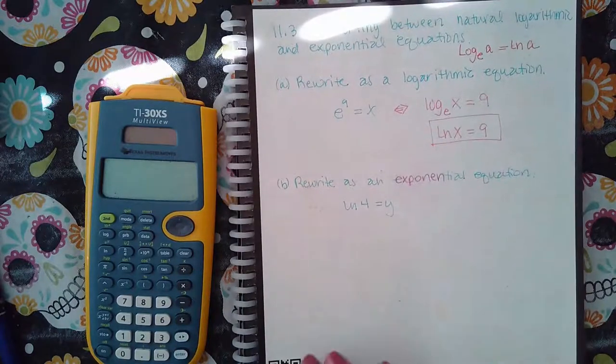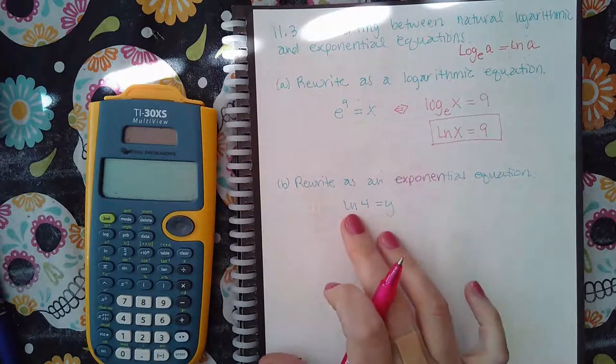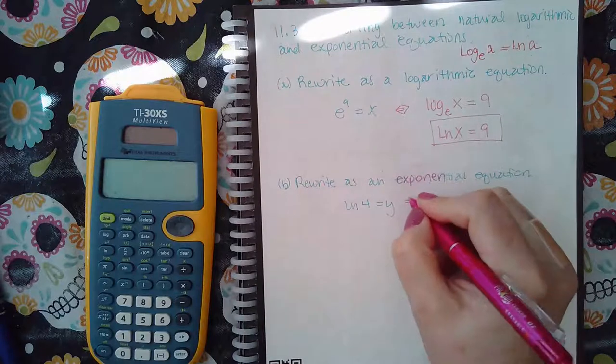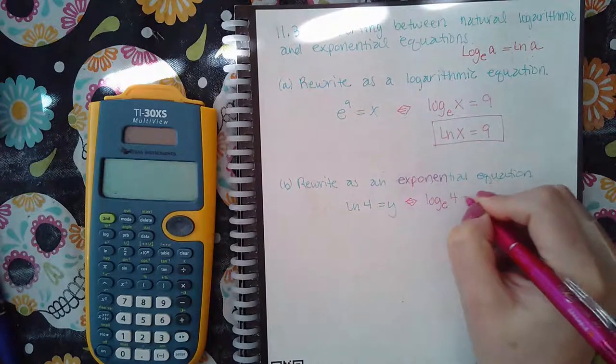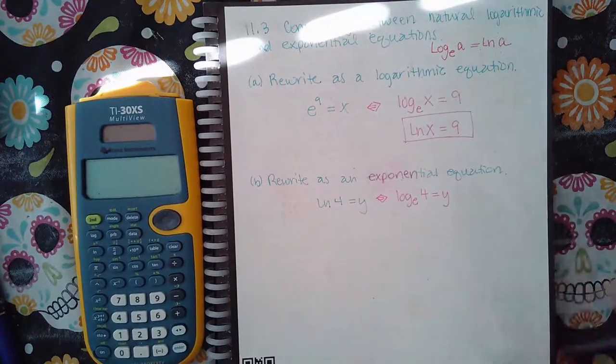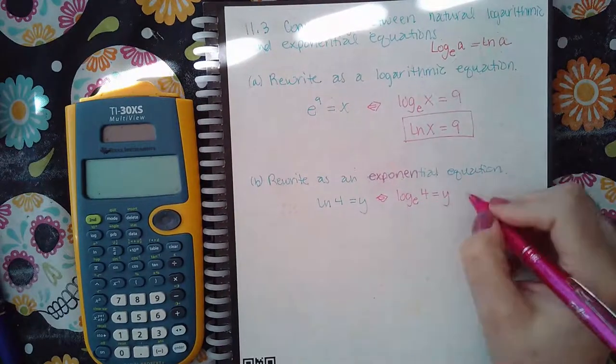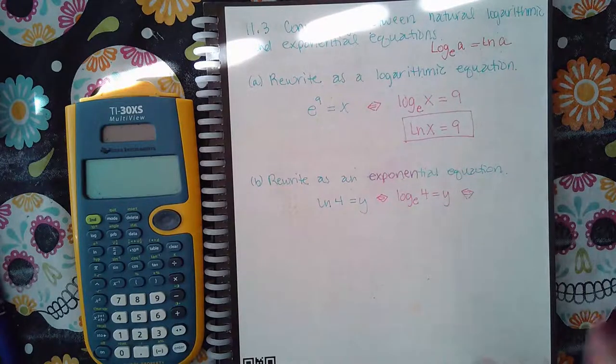Now for here, it says rewrite the exponential. Now there's no definition for ln. So we do have to change this into its log base e form, even though that's not the formal way you're supposed to write ln or natural log. But we need to have it like that so we can identify the base and the exponent and then the argument.